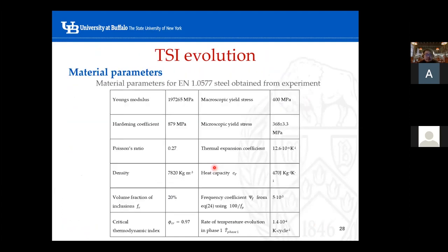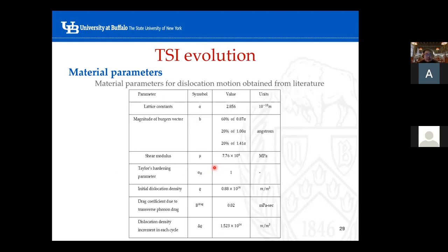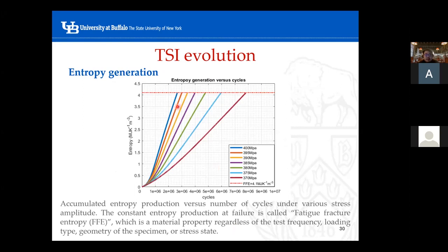These are the material parameters for dislocation motions. Finally, we have entropy generation versus number of cycles. For all stress levels tested — around seven different datasets — at failure, they all accumulate the same amount of entropy. This accumulated entropy at failure is called the fatigue fracture entropy. The fatigue fracture entropy depends on the material, not the geometry, test frequency, or loading type. For this material it is around 4.1.